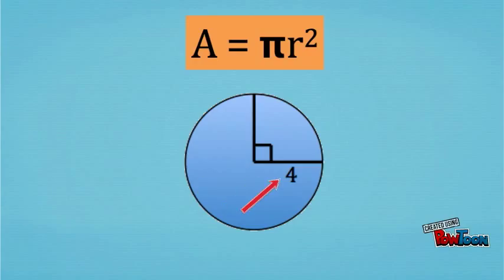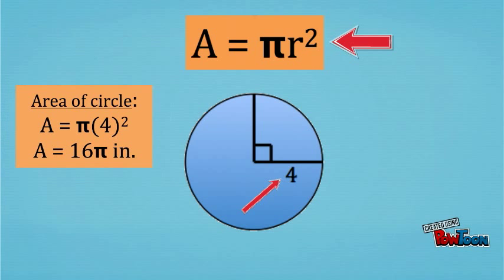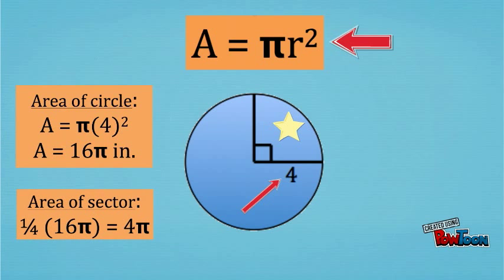Our circle has a radius of four. And using the formula for the area of a circle, A equals pi r squared, we can determine that the area of the circle would be pi times four squared, simplified to 16 pi. Now to find the area of the sector, we can multiply one fourth times 16 pi, and determine that the area of our sector is four pi.